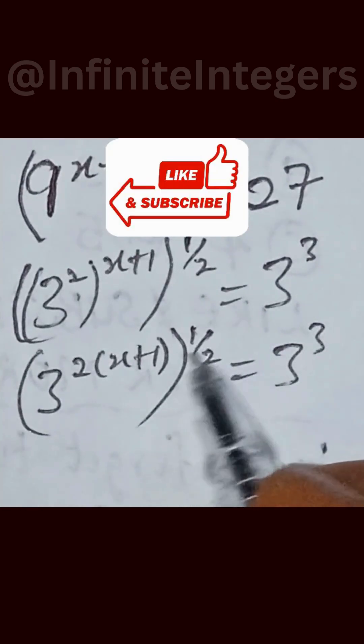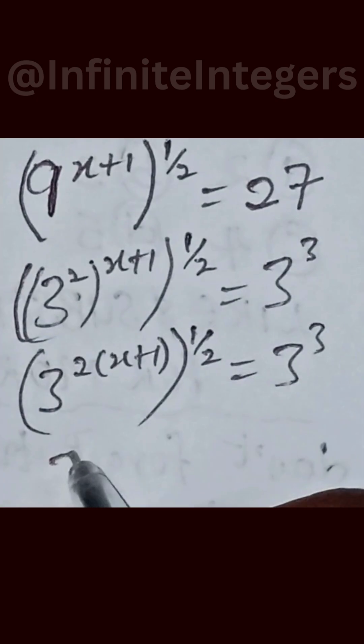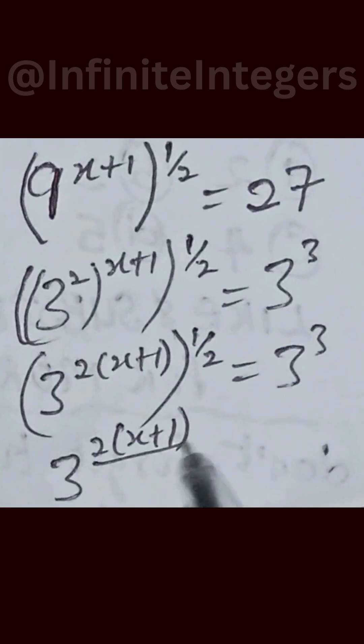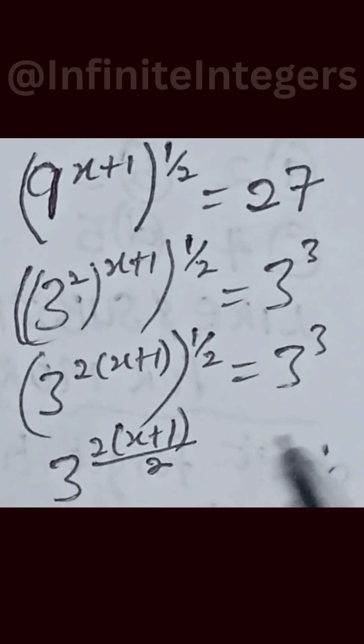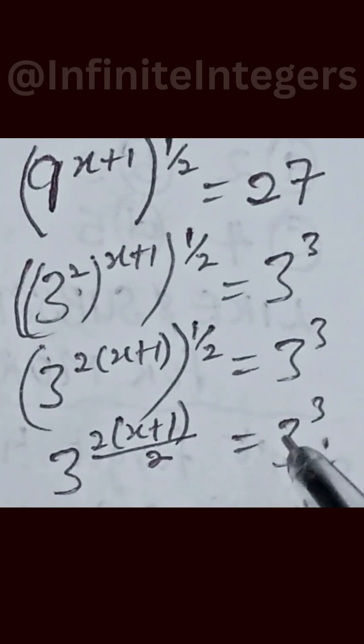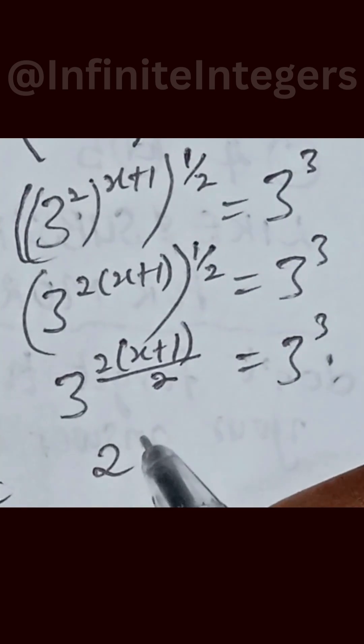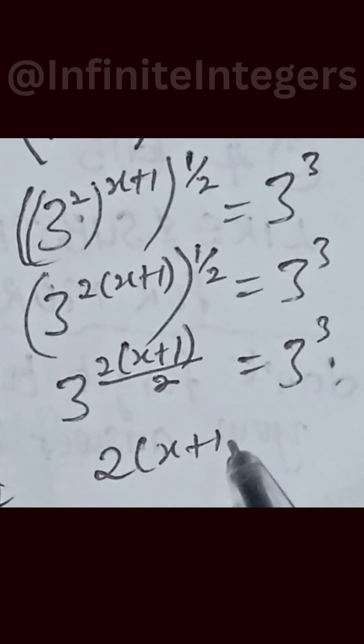This exponent together, so we have 3 raised to power 2, into bracket x plus 1, with the bracket over 2, equal to 3 raised to power 3. So we can now equate the exponents, so we have 2 into bracket x plus 1 over 2.